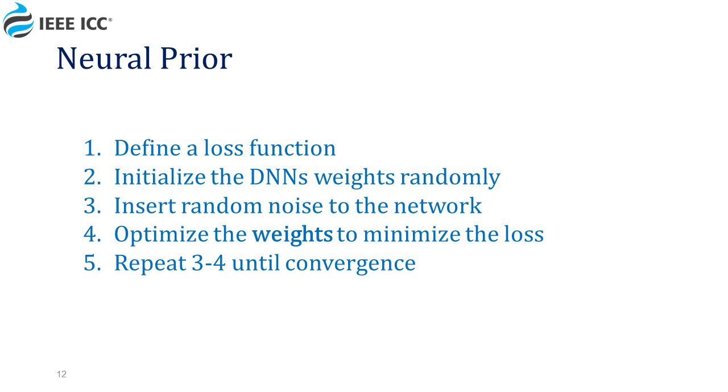In detail, what we are going to do is to create a neural network whose input is random Gaussian noise and whose output is a complete IRS configuration. We then define a loss function to examine the network output and initialize the DNN weights randomly.